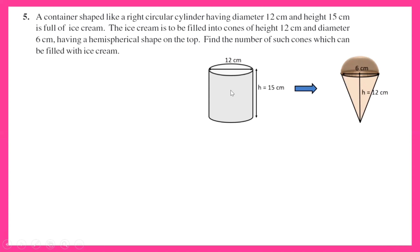If there are n such cones being filled up, then n into the volume of one cone will be equal to the volume of the cylinder. So n will be equal to the volume of the cylinder divided by the volume of each cone with the hemispherical top.